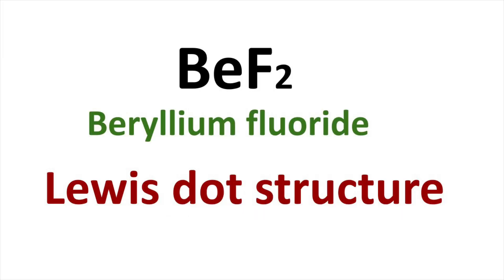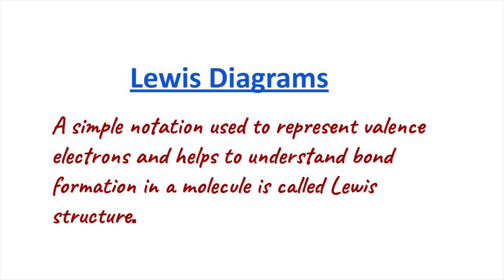Welcome to Aurora Chemistry for Everyone. A simple notation used to represent valence electrons and also provides bonding in a molecule is called Lewis dot diagrams.